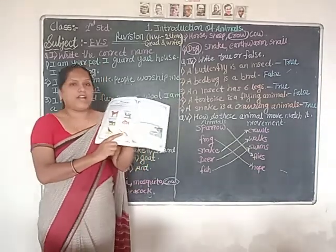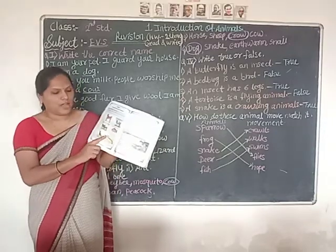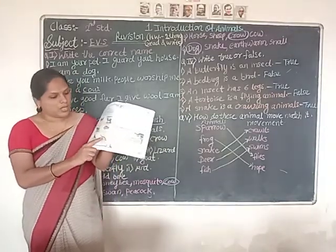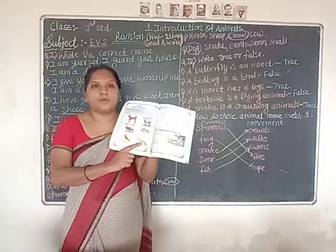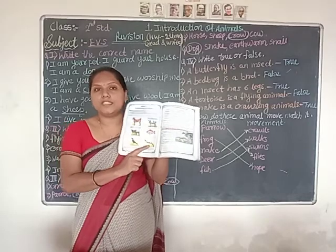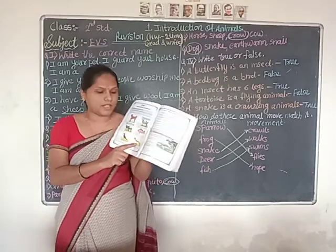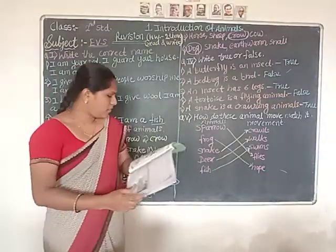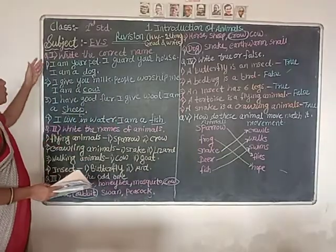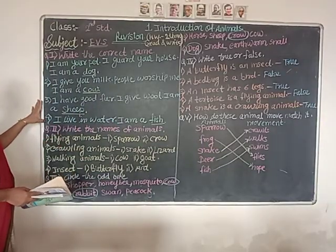Next one — ants are saying: 'We are black, brown, and sometimes red in color, and we live in a group.' Which insect is this? This is an ant. So these are all the riddles — you have to solve them correctly.